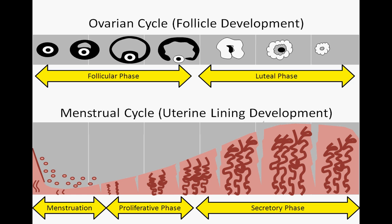Hormonal control of the ovarian and menstrual cycles allows for precise coordination of these two complex processes and ensures that any potential embryo will have the highest possible opportunity for developmental success.